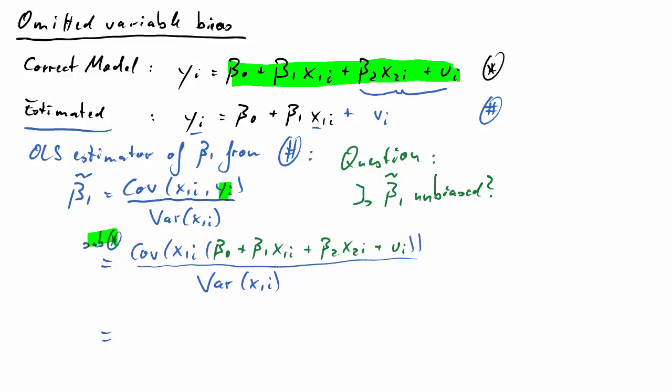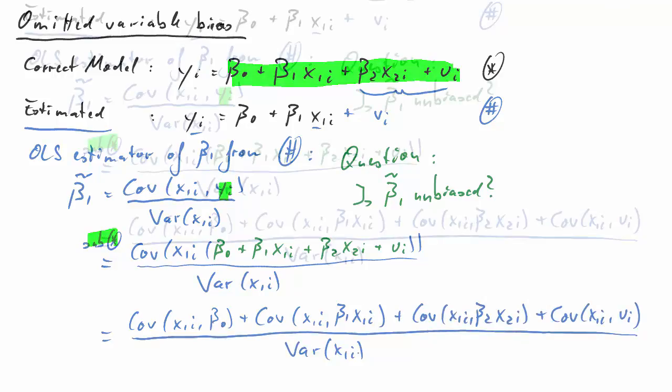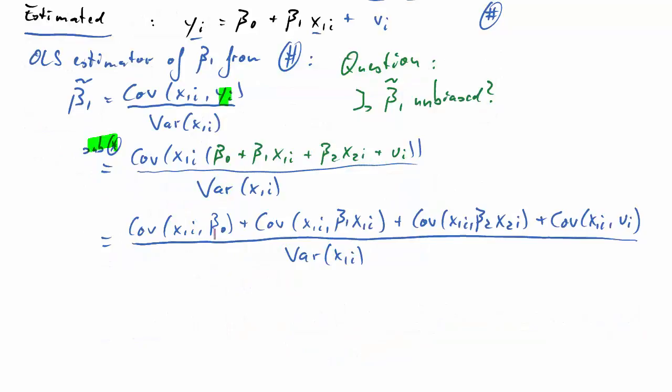Now the covariance of a sum is also the sum of covariances. So what we get here is the covariance of x1 and beta 0, covariance of x1 and beta 1 times x1, and so forth, then divided by the variance in the end. Let's look at these four terms in turn.